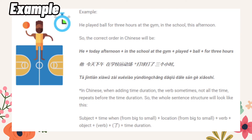In Chinese, when adding the time duration, the verb sometimes — not all the time — repeats before the time duration. So the whole sentence structure will look like this: subject plus time when from big to small plus location from big to small plus verb plus object plus verb plus time duration.